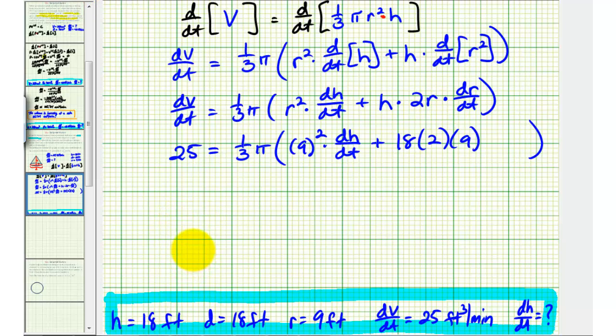So the radius is always half the height. That means dr/dt, or the change in the radius with respect to time, would always have to be half dh/dt, or half the change in the height with respect to time. So we can substitute one-half dh/dt for dr/dt.